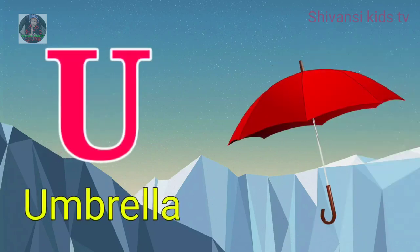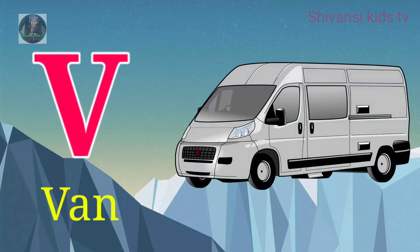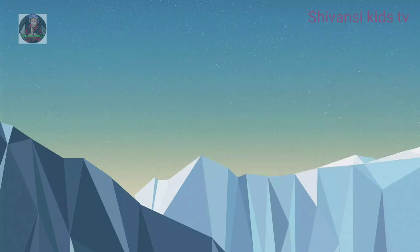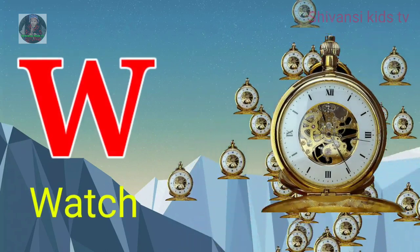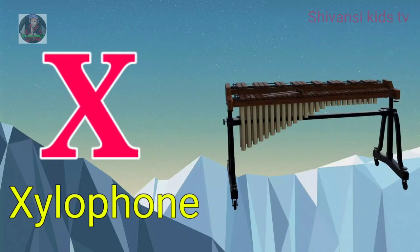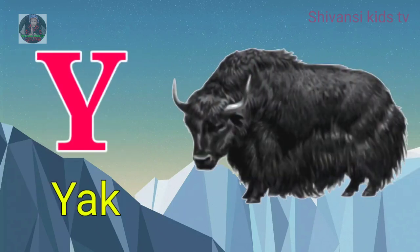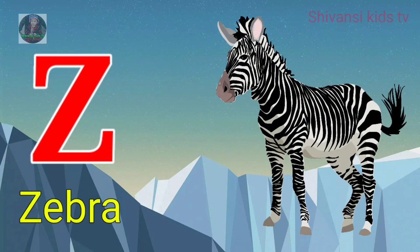U for umbrella, V for van, W for watch, X for xylophone, Y for yard, Z for zebra.